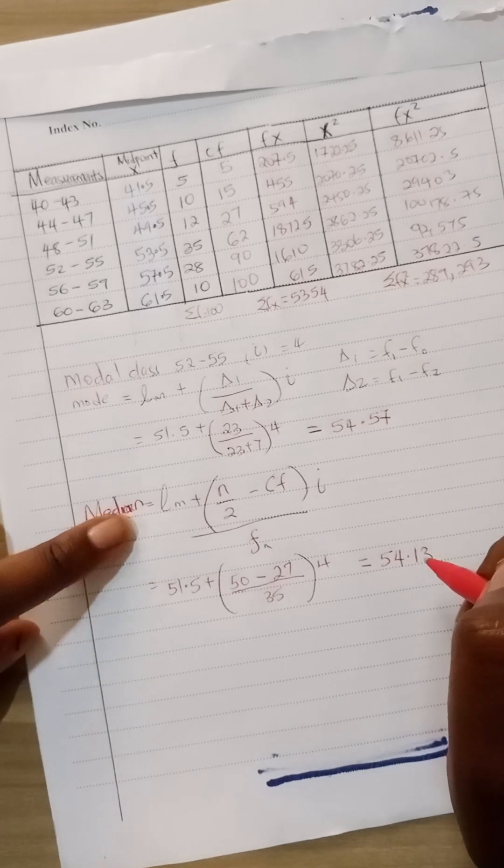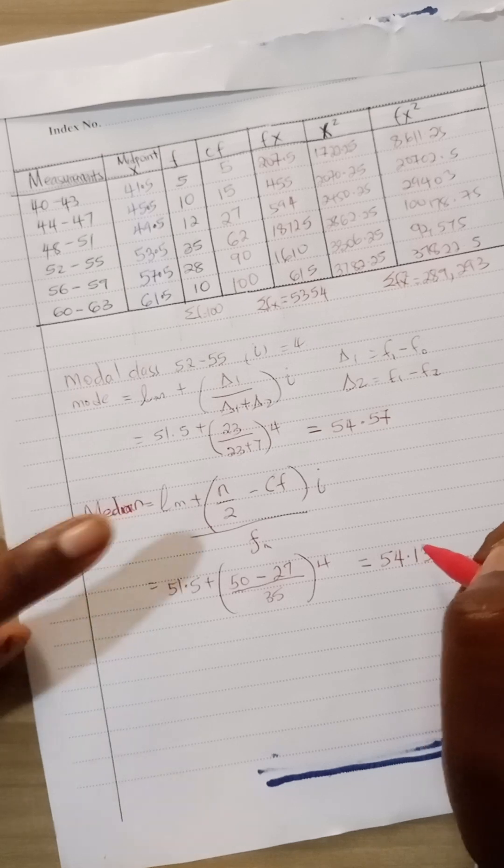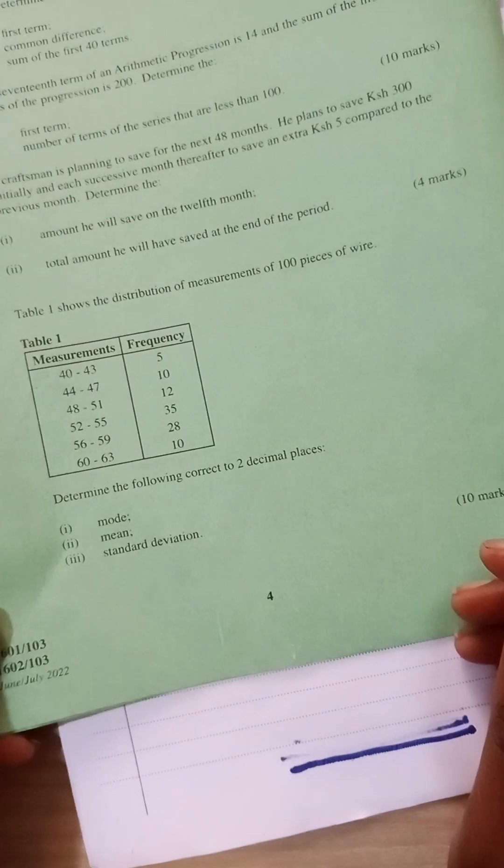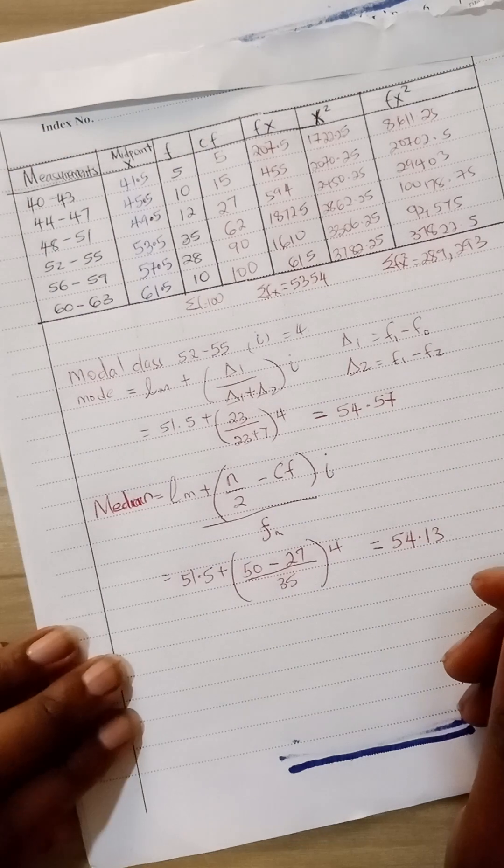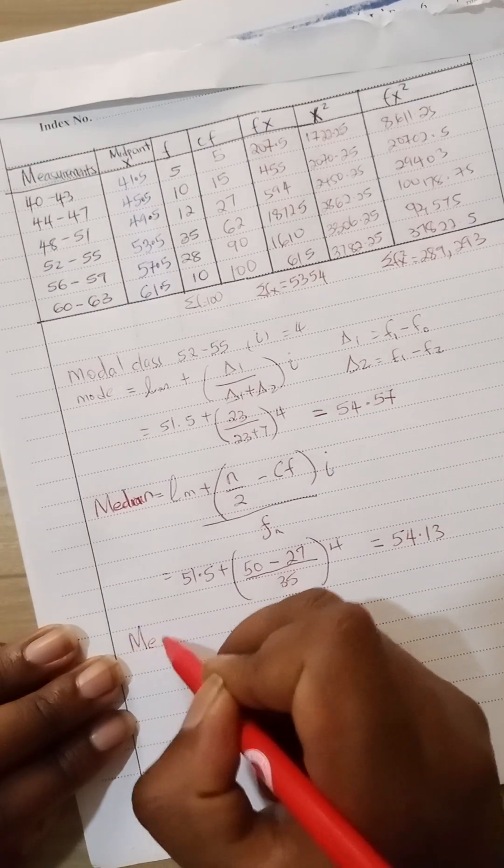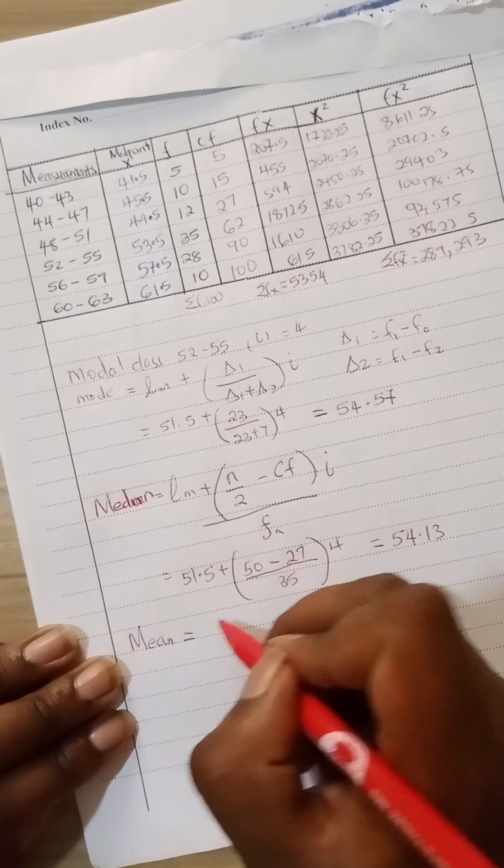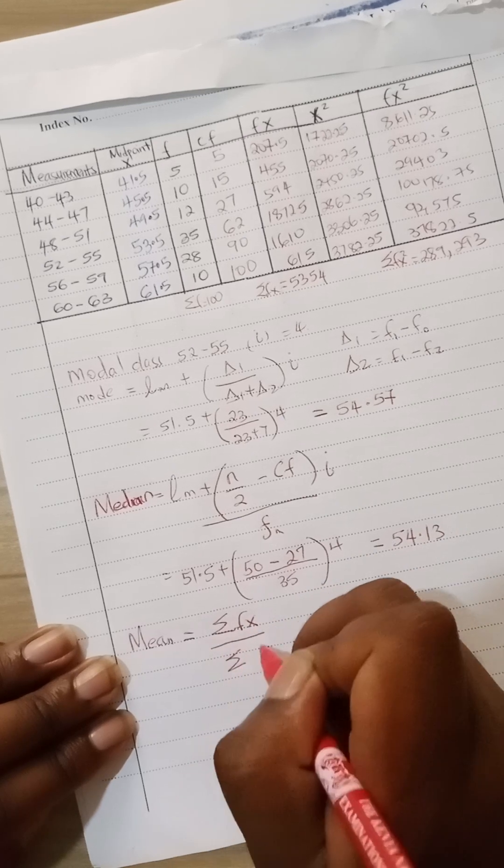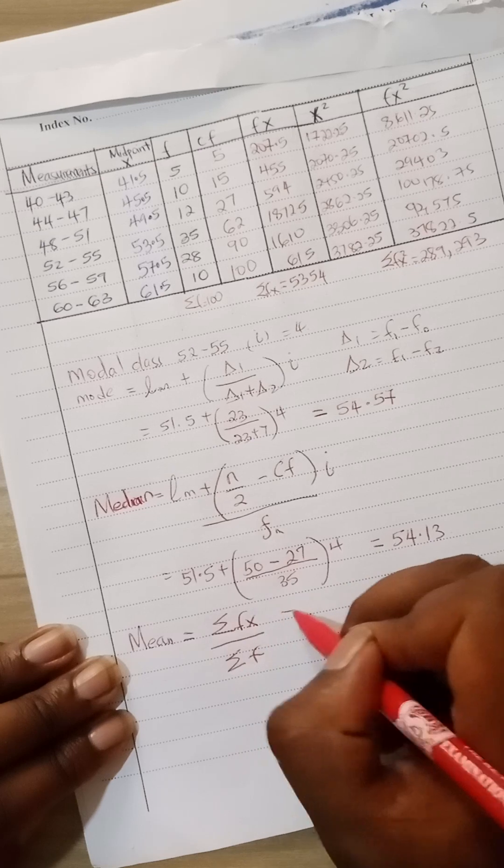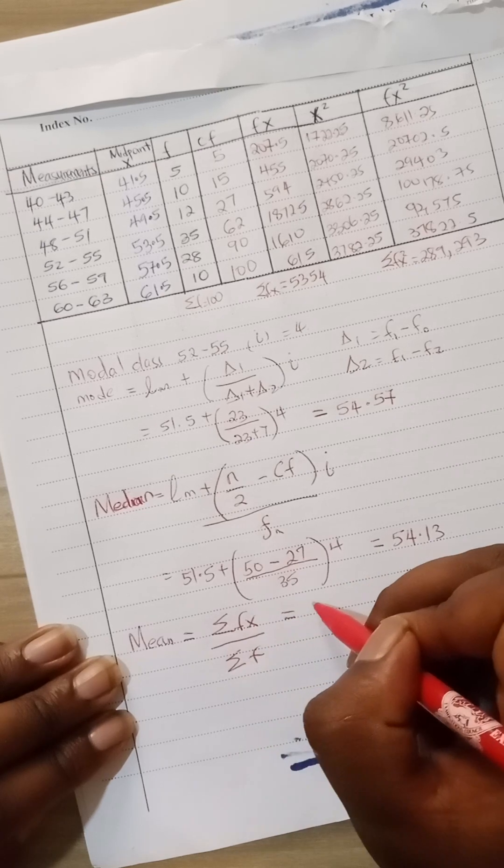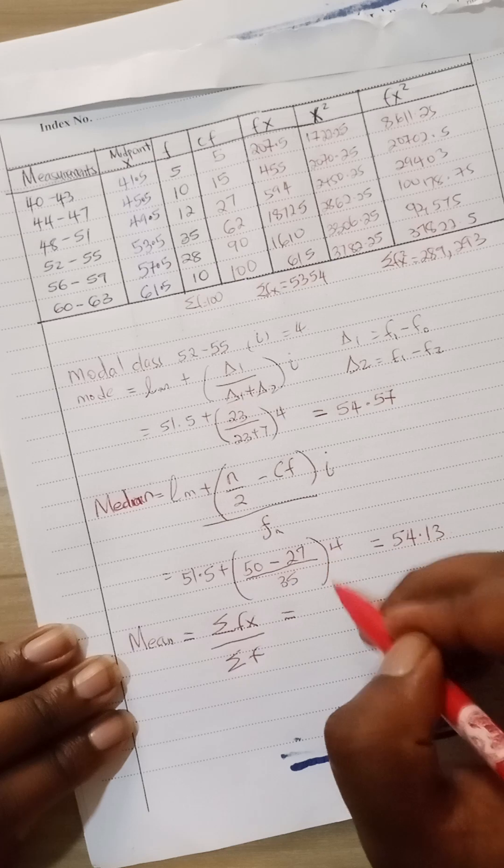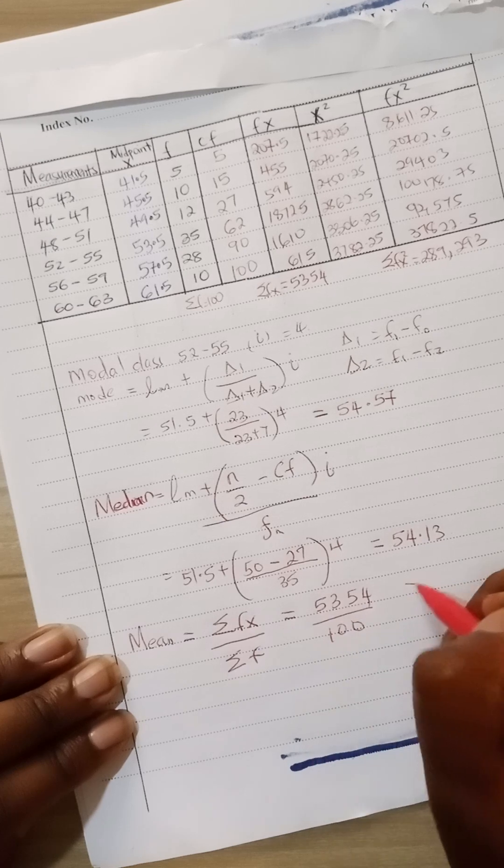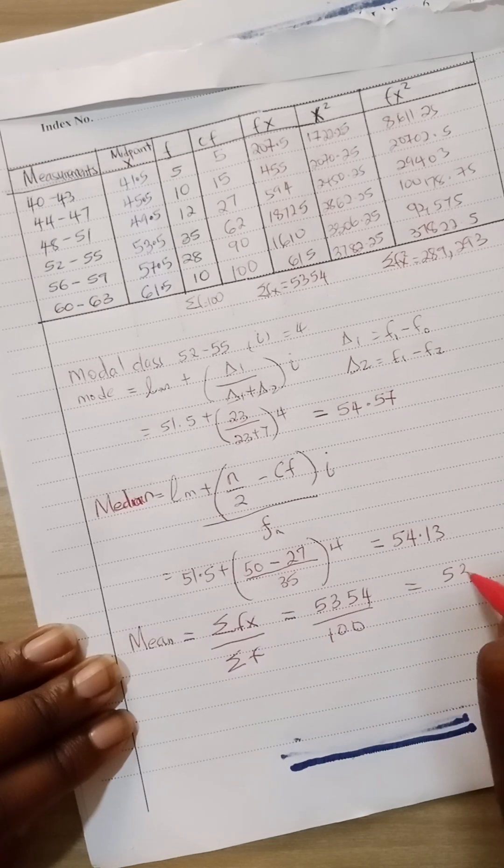Actually they had not asked for the median, I think I have given you a bonus on how to calculate the median. The question was asking for the mean. The mean is basically given by this formula: summation of fx divided by summation of F. Summation of fx is basically 5354 divided by 100, and you get 53.54.